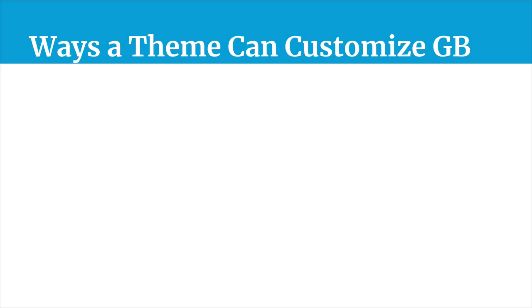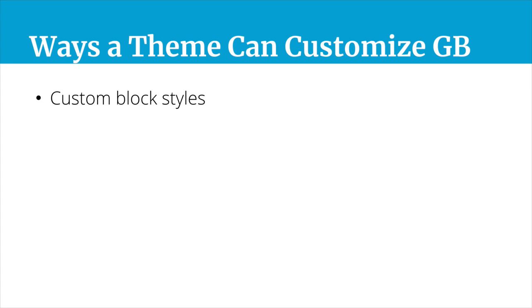The first way that a theme can customize the Gutenberg experience or integrate with it is to simply apply custom styles to the default Gutenberg blocks. This will make sure that they all align with your theme and look really nice.